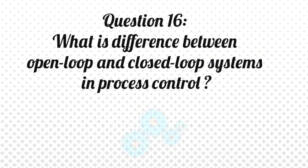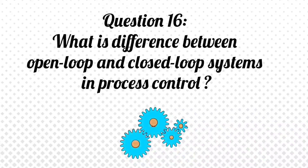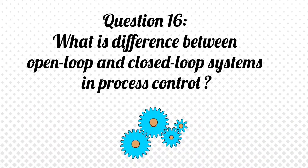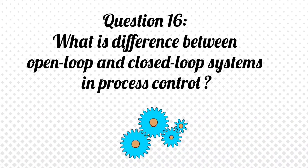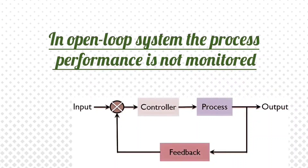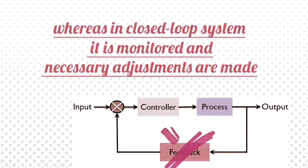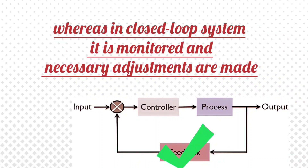Question 16: What is the difference between open loop and closed loop systems in process control? Answer: In an open loop system, the process performance is not monitored, whereas in a closed loop system, it is monitored and necessary adjustments are made.